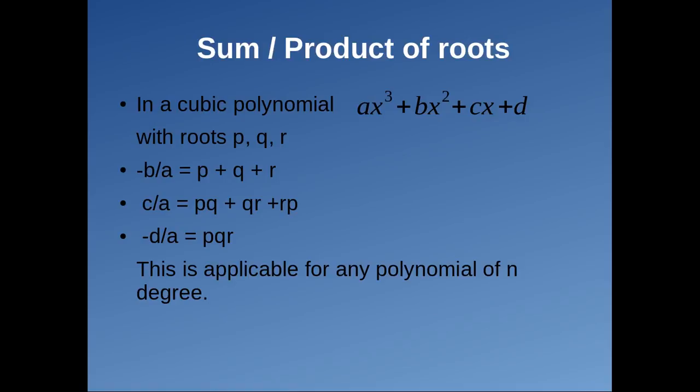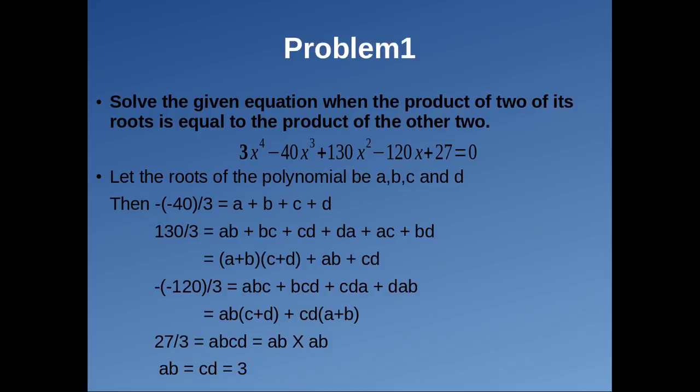Now let's try two problems. In the first one, we have to solve the given equation when it is told that the product of two roots equals the product of the other two. We know that the sum of all roots a plus b plus c plus d is 40 by 3, the sum of roots taken two at a time is 130 by 3, the sum of roots taken three at a time is 120 by 3, and the product of all roots is 27 by 3 which equals 9. Since ab equals cd, we get ab equals cd equals 3.